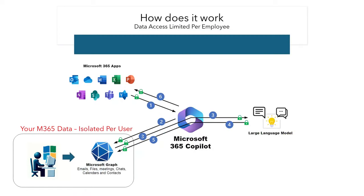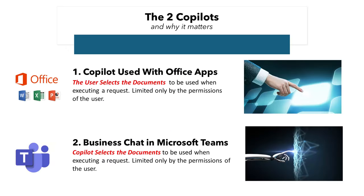It's important to understand that when each individual is given a Copilot license, their iteration of Copilot is able to access just the documents that that individual is able to access. It's also very important to understand that there are actually two very different versions of Copilot included in an individual's license, and this difference is at the heart of significant security risks that most users are unaware of. In Microsoft Office applications like Word, Excel, or PowerPoint, users can control which specific documents Copilot accesses, providing a tailored and secure experience.